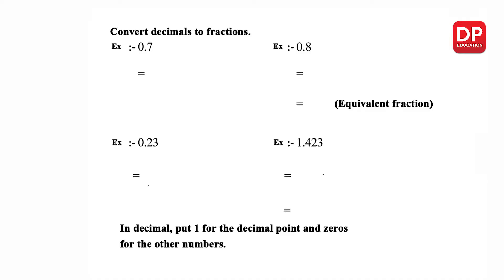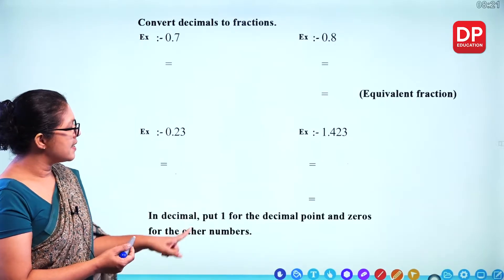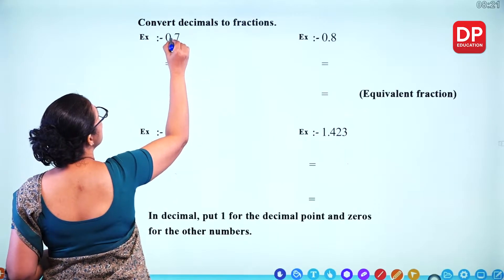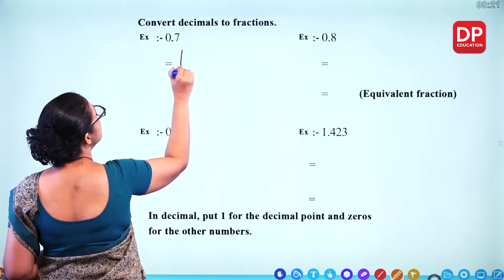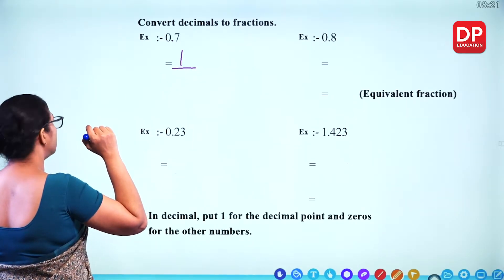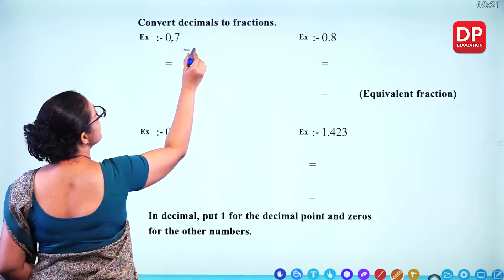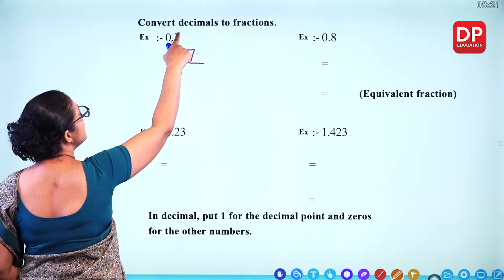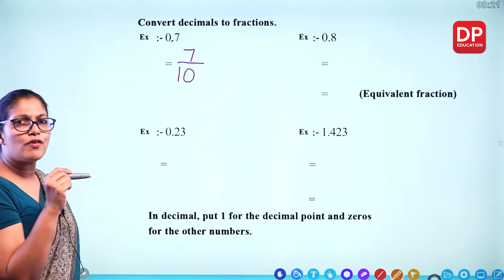Now convert decimals to fractions. To convert 0.7 to a fraction: put 1 for the decimal point and 0s for the other digits. There is 1 place after the decimal point, so you put 0 — giving 7 over 10.